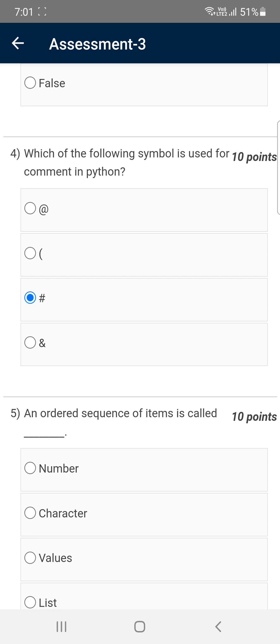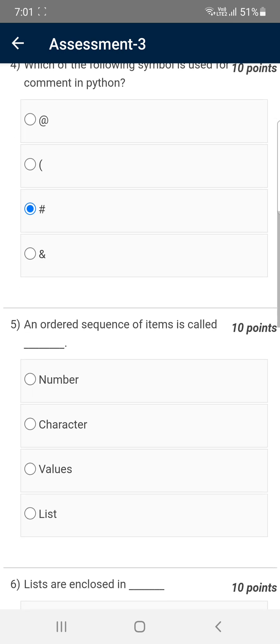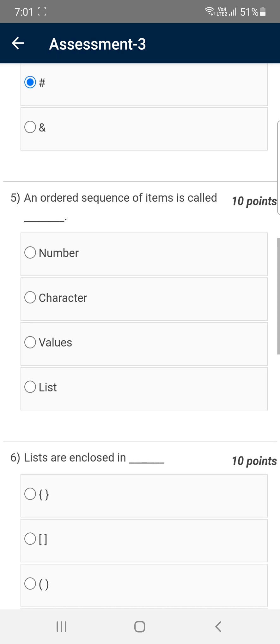Moving on to fifth question: An ordered sequence of items is called... We know the ordered sequence is list, that is last option.